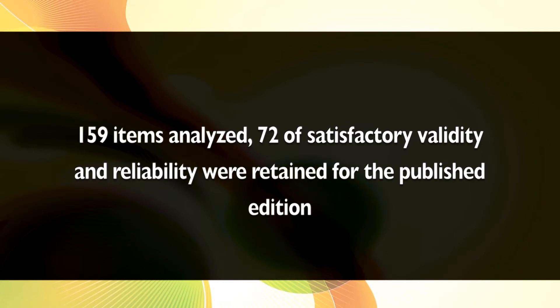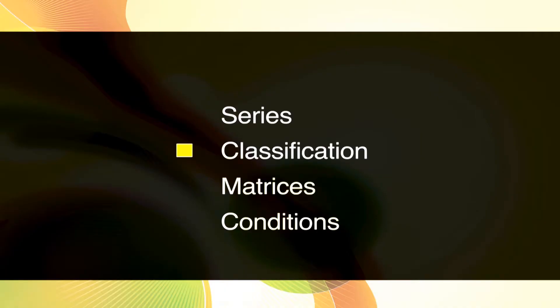Of the 159 items analyzed, 72 of satisfactory validity and reliability were retained for the published edition. In 1949, the Culture Fair Intelligence Test underwent another revision and adopted a new format consisting of four subtests — series, classification, matrices, and conditions — at each of two difficulty levels. In 1961, there was a slight adjustment in the difficulty level sequencing for a few items.